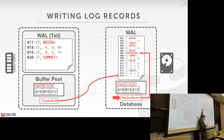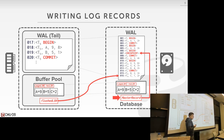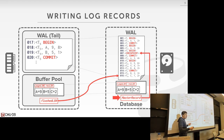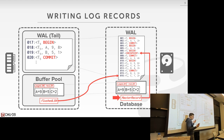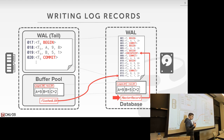Without the master record and without these checkpoints, we have to start from the very beginning, because we don't know anything about what pages have been written out. As the buffer pool is writing out pages, we're not logging that. So we don't know potentially what pages have been written out to disk if we recover after a crash — we just know the log sequence numbers that have been written out.